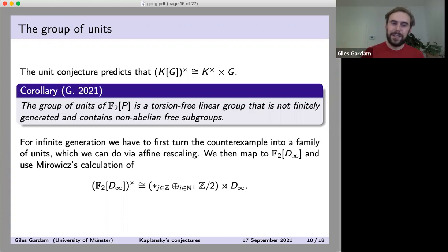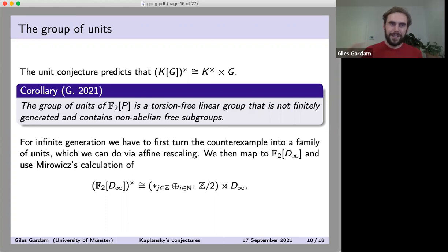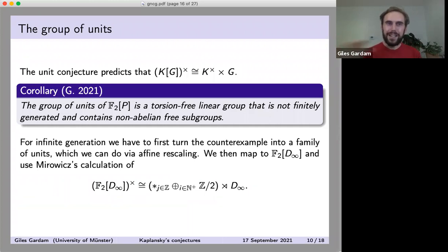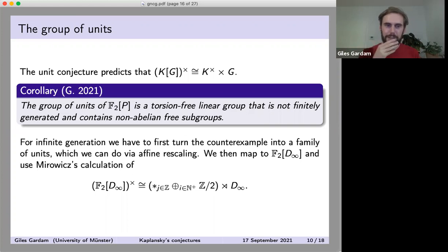There are a few different maps from the group P onto the infinite dihedral group, which induce maps from its units to the units of the dihedral group. Under the retraction, they hit an infinite sum of ℤ/2s — that's how we know the unit group is not finitely generated. Similarly, we can see that we have things showing up in different free factors, giving us the fact that we have free subgroups.